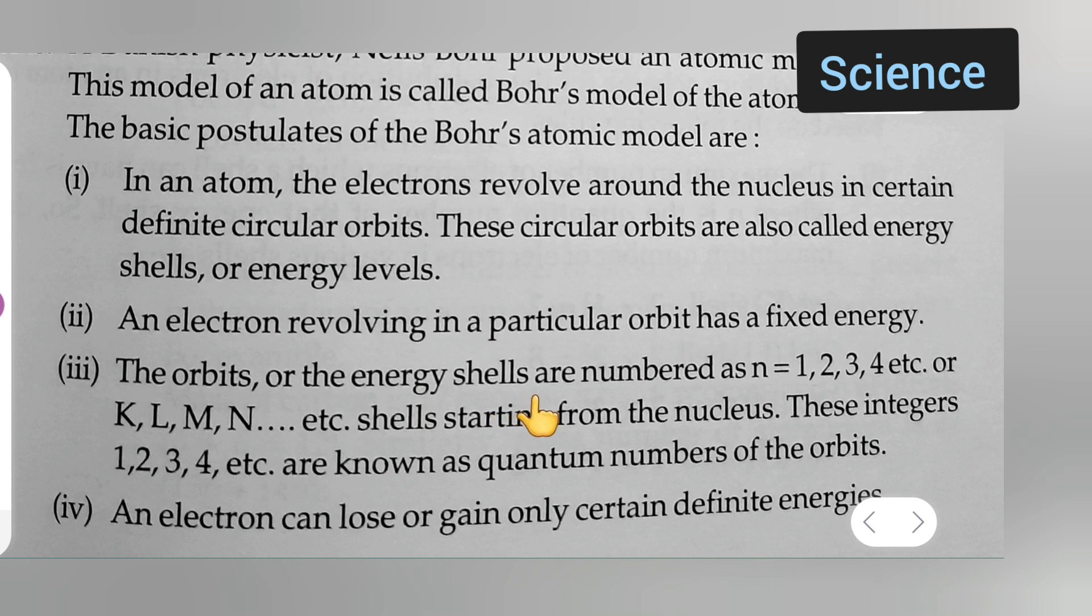The orbits or the energy shells are numbered as n = 1, 2, 3, 4, etc., or K, L, M, N, etc., shells starting from the nucleus. These integers 1, 2, 3, 4, etc. are known as quantum numbers of the orbits.